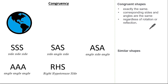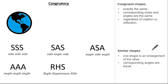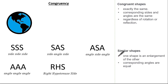This is different to similar shapes, whereby shapes are similar if one is an enlargement of the other but the corresponding angles are equal. Now when looking at congruent triangles or similar triangles, there are five main conditions which will determine if our triangle is congruent or similar.